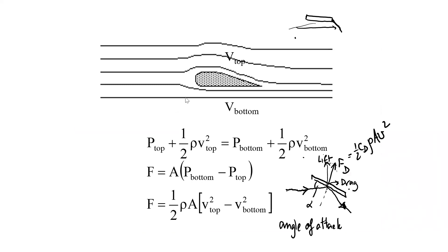You will notice that the airplane airfoil has a smooth and curved surface on the top and sometimes a flat surface on the bottom. When the streamline reaches this, the velocity on the top is moving a little bit faster than the velocity on the bottom. With the same height, Bernoulli's equation says P_top plus one-half rho V_top squared equals P_bottom plus one-half rho V_bottom squared. The difference in pressure between the top and the bottom results in lift.